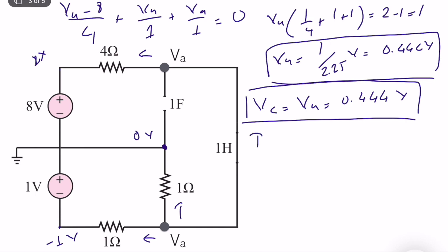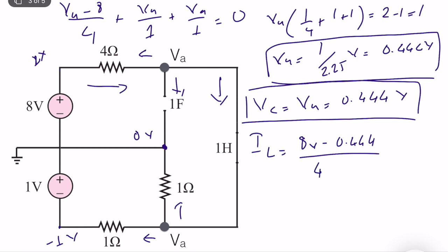Now let's compute IL, the inductor current. Since there is no current passing through the capacitor (open circuit), IL equals the current passing through the 4-ohm resistor, which is equal to 8 volts minus VA (0.444 volts), divided by 4 ohms, which equals 1.89 amps. So we have computed the current through the inductor and the voltage across the capacitor.